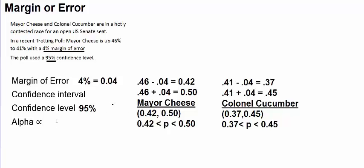Confidence level: we are 95% confident that the opinion of the population would be between 0.42 and 0.5. Or we're 95% confident that at this point, between 42 and 50% of the electorate will vote for Mayor Cheese, and between 37 and 45% will vote for Colonel Cucumber. Keep in mind, 95%, as a fraction, that is 19 over 20.